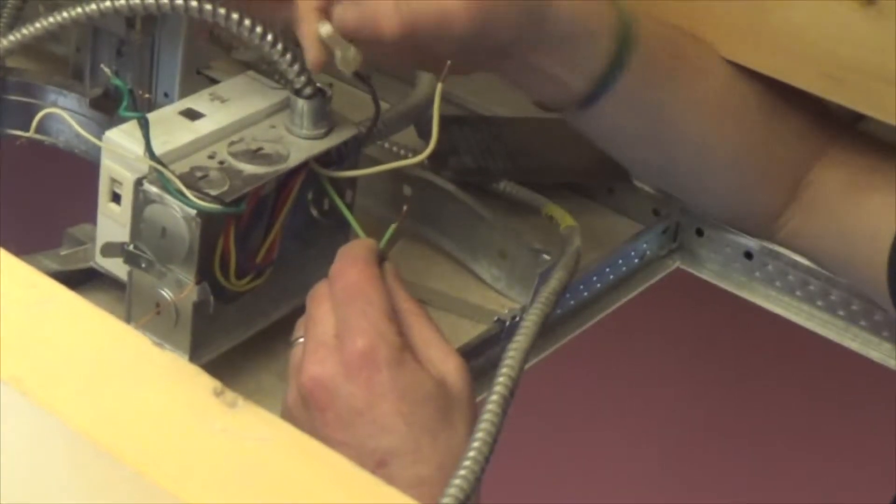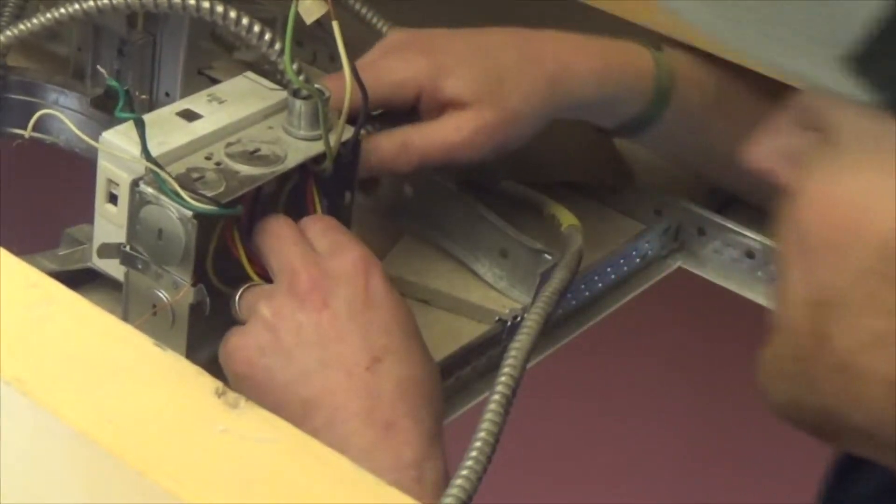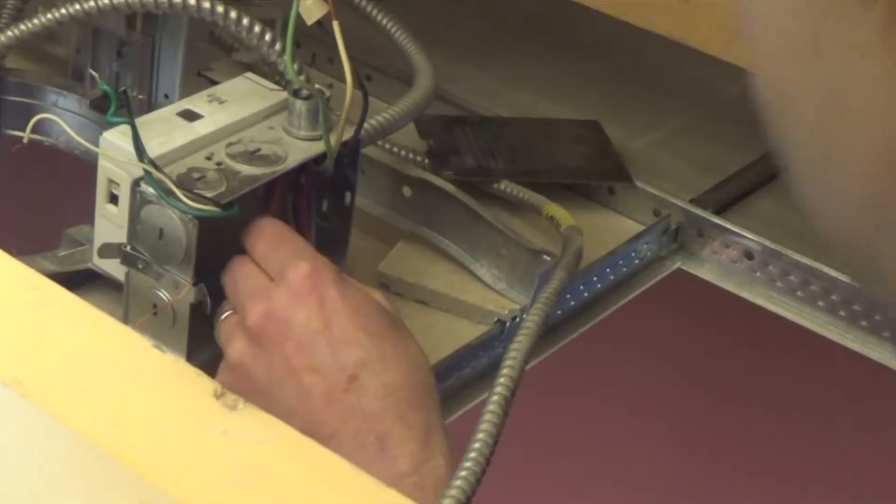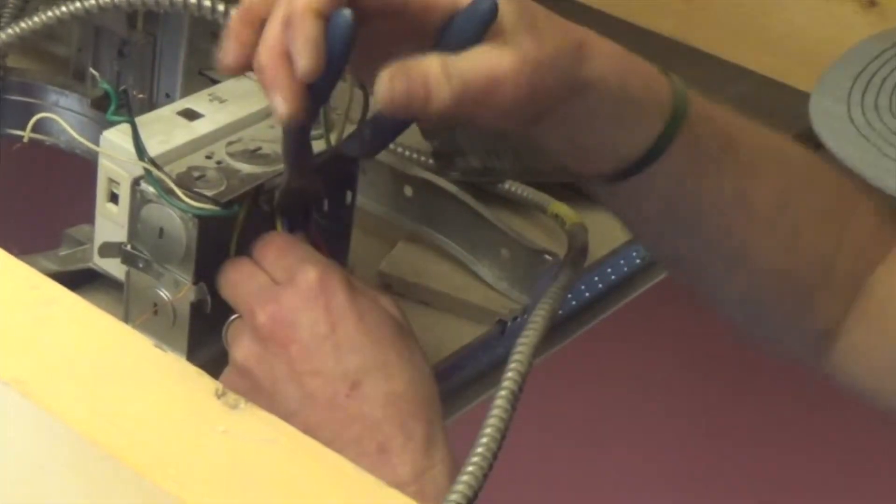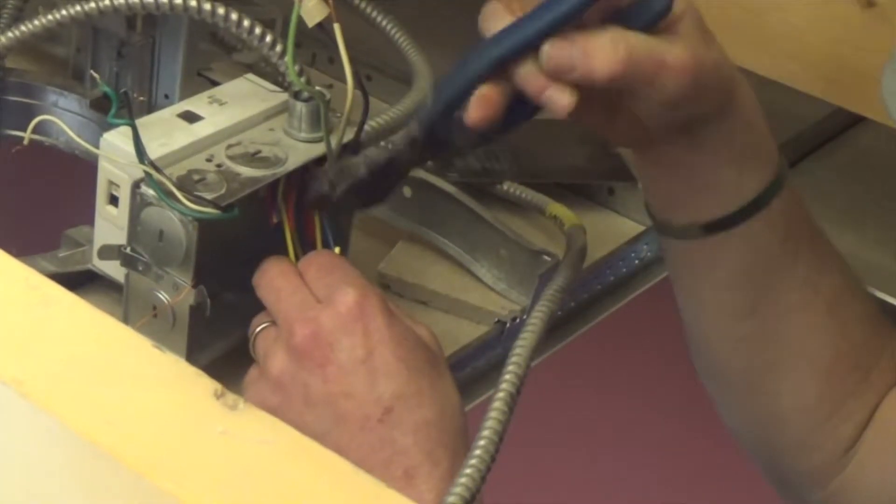These black, white, and green are what we're going to use to power up the new can light and the rest of this stuff really all just goes away. And for that, we're just going to take some cutters and we're just going to mangle these wires. There is no sense in salvaging any of them.